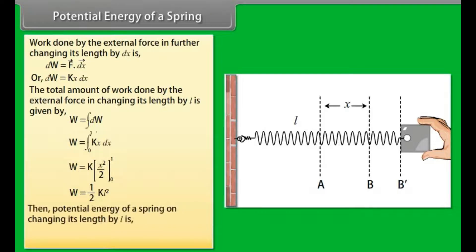Then potential energy of a spring on changing its length by L is potential energy = W. Potential energy = ½kL².